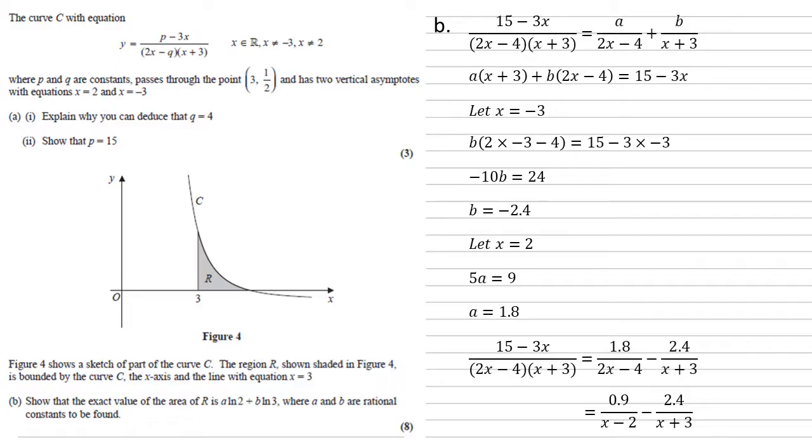As we're finding an area we're also going to need to know where the curve crosses through the x-axis. So we know that this is when the numerator of our fraction, the 15 minus 3x is going to be equal to 0 because it's crossing through the x-axis. So 15 minus 3x equals 0 gives us x equals 5, so we're going to be looking for the area between 3 and 5.